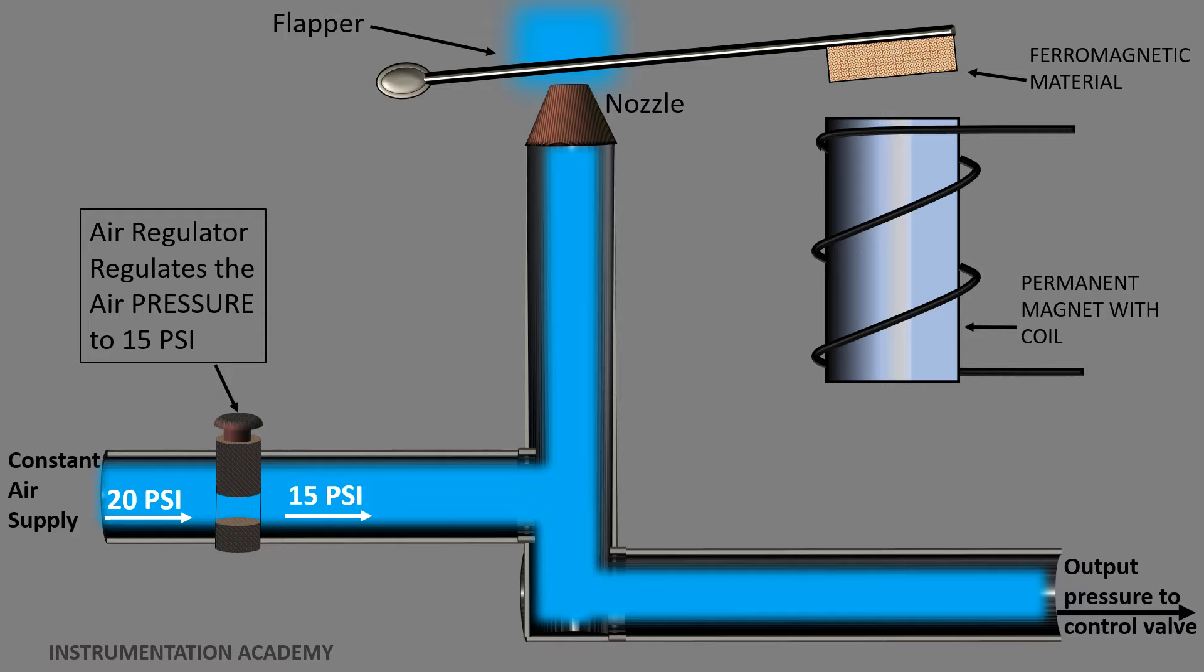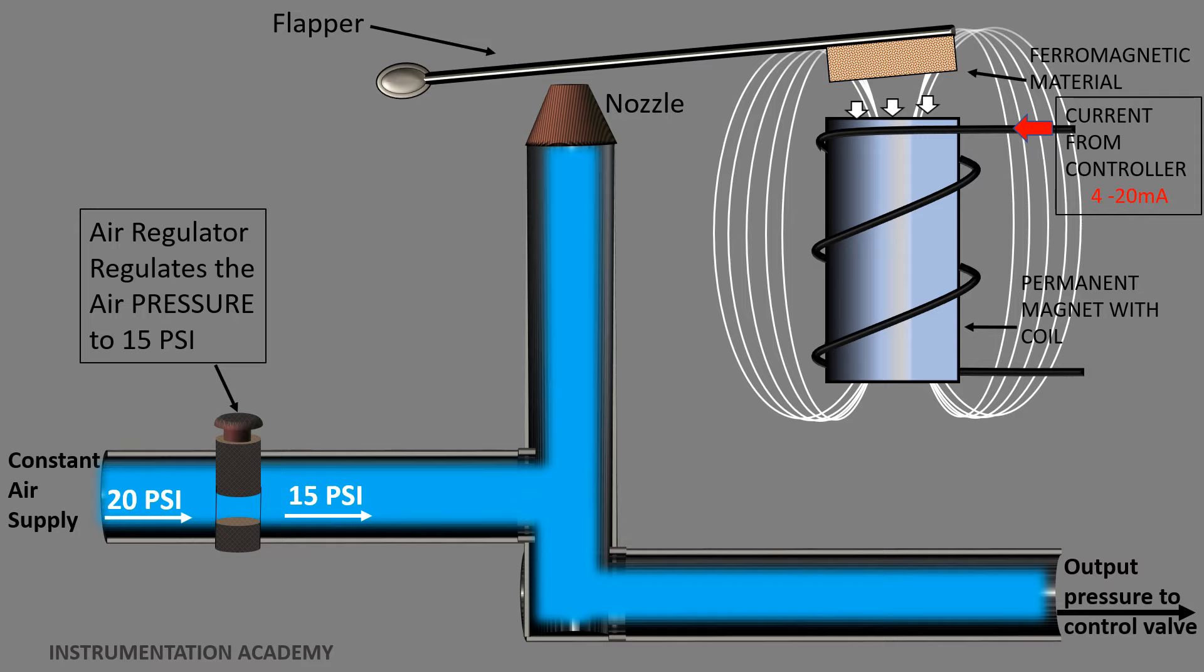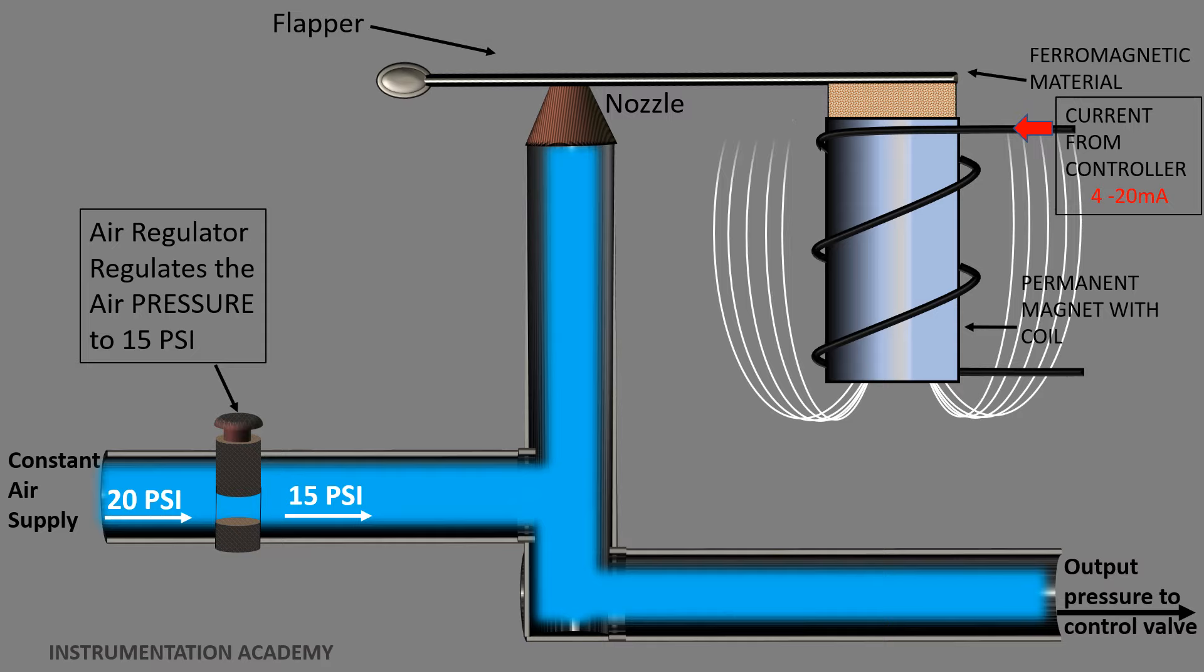When the current from the controller passes through the coil wound around the permanent magnet, a magnetic field is produced. The electromagnet then tends to attract the ferromagnetic material attached to the free end of the flapper. It causes the flapper to move downwards towards the coil. Stronger the current flowing through the coil, stronger will be the attraction between the coil and the ferromagnetic material.